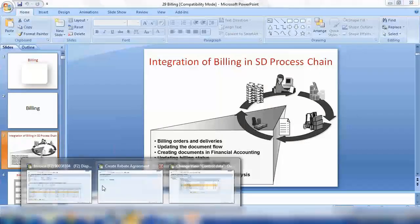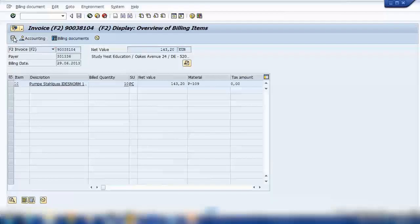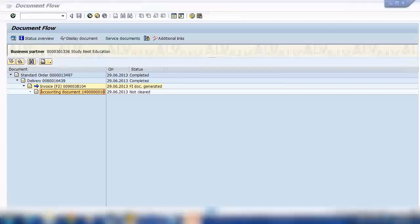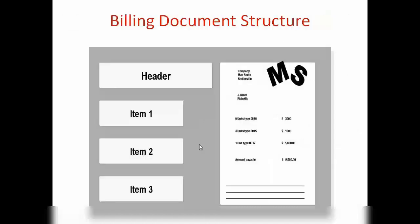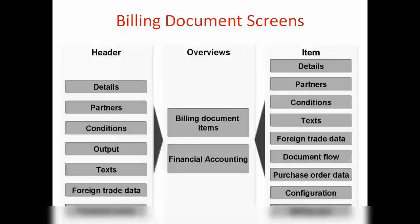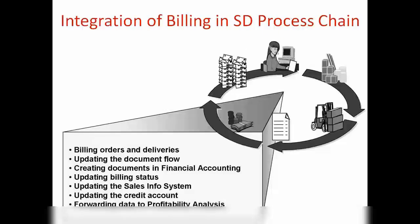Let me open a billing document here. When we create a billing document, the system will update the document flow — that's one thing. If you go to the document flow, the system will say 'I have created a new billing document here.' So the system updates the document flow and also handles billing for orders and deliveries.